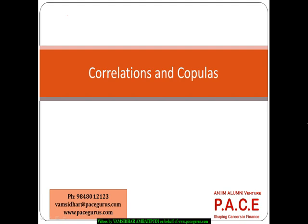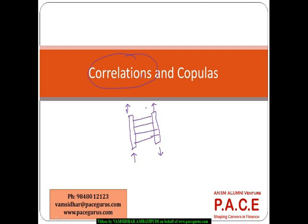Let us look at that important concept which specifies the dependent structure between two variables — a very important process in risk management. When there are two different kinds of exposures, I want to see what kind of relationship exists between them, so that if one is generating a loss, can the other give me a profit? Or if one leads to a loss, will the other also go into a loss? The dependent structure between variables is very heavily explained by the concept of correlation.